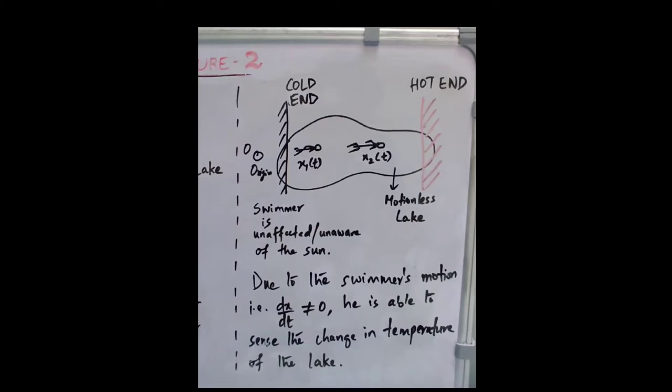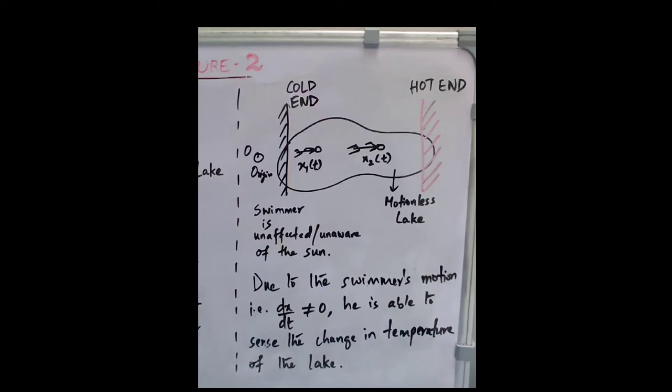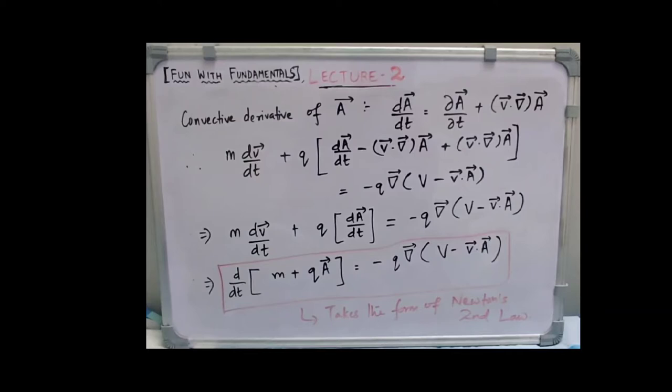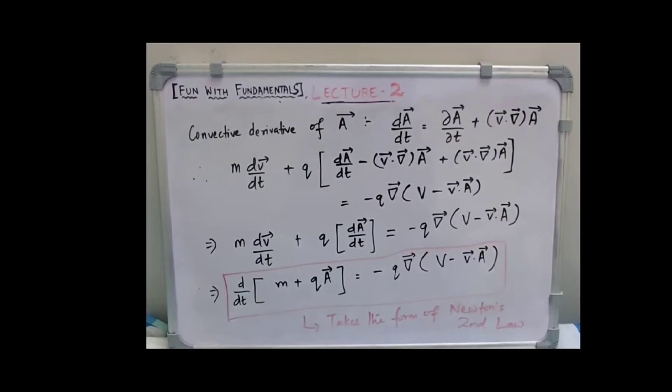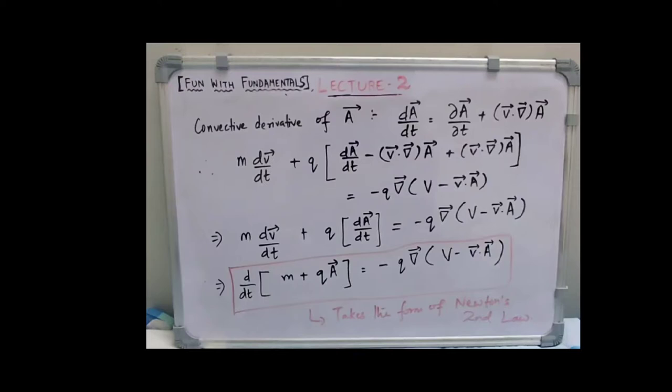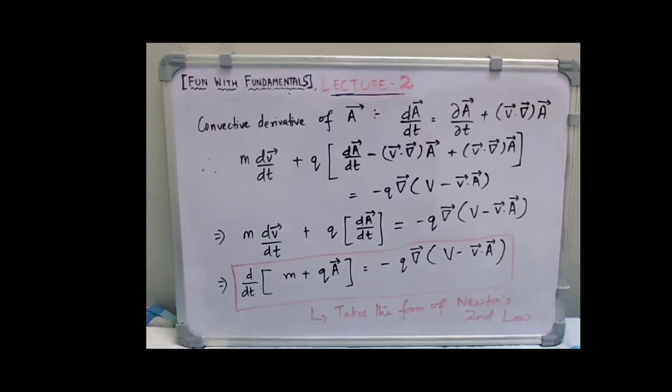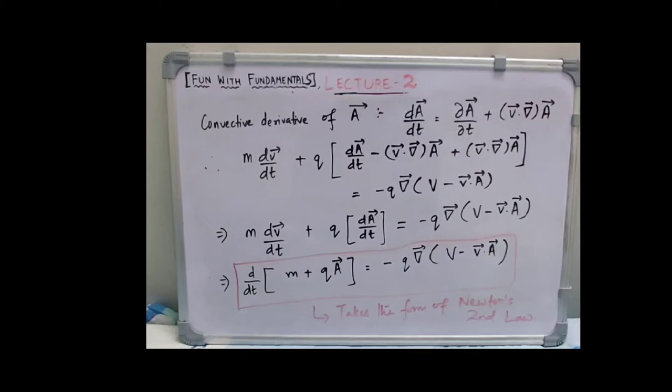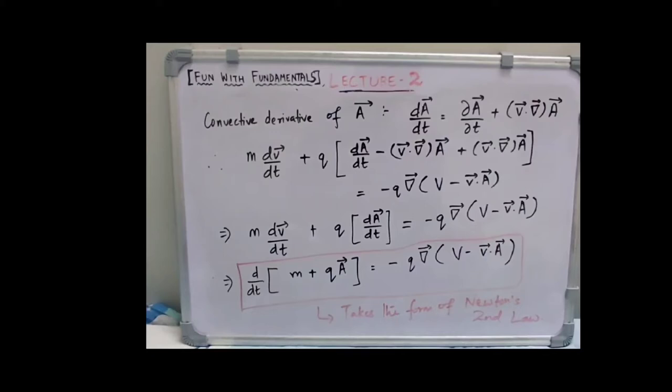The convective derivative detects change by changing position along that direction. We have the definition: dA/dt equals del A/del t plus V dot del times A. Substituting it back into the equation we were deriving, we get m dv/dt plus q times dA/dt minus V dot gradient of A plus V dot gradient of A, equal to minus q times gradient of V minus V dot A. Here the first two terms inside the square bracket cancel out.